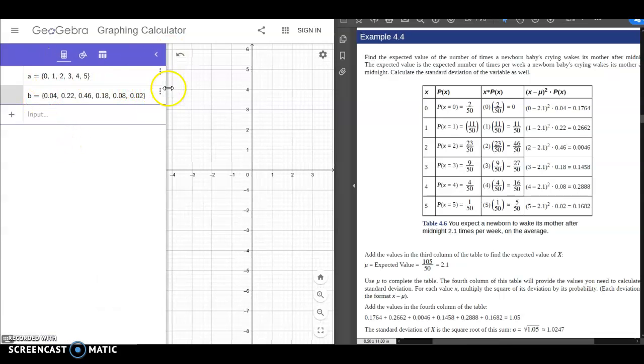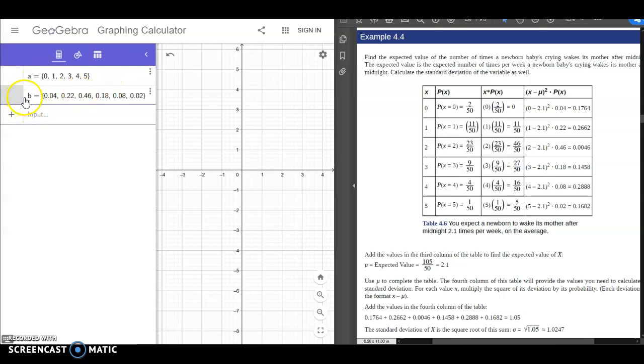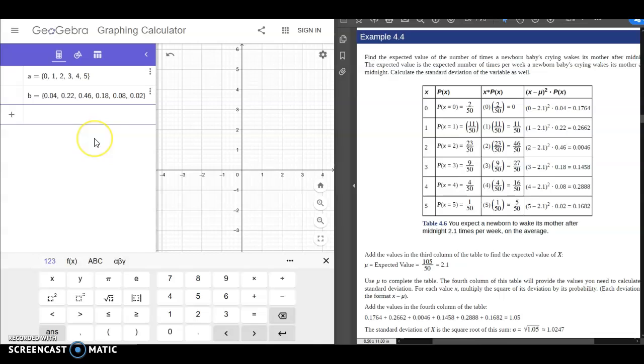I have my two sets, my outcomes, and my probabilities of those outcomes. So now that I have that, let's go ahead and calculate the mean. Or, sorry, not the mean. Did I give it away? Whoops. Actually, the expected value is what we want.